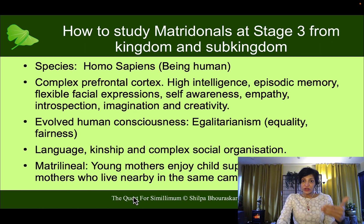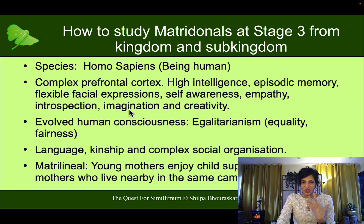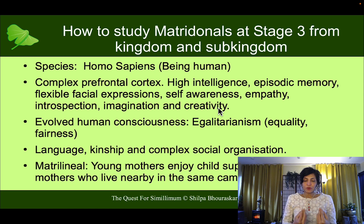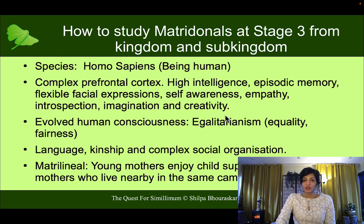If you look more deeply at what makes humans different from apes, it is the very complex prefrontal cortex — there is very high intelligence and episodic memory. You can remember incidents and memories of certain situations. They have very complex, flexible facial expressions and are very self-aware. You see in matridonals a lot of awareness about self, about harmony, desire for empathy, and a detached ego — they are able to look at themselves objectively and subjectively and empathize with others, which is quite unique. And then introspection, imagination and creativity come up strongly.